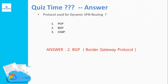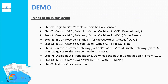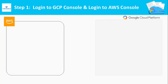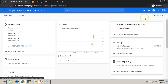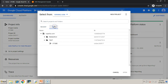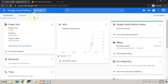Let's proceed to the demo. We have around nine steps for this demo. Step one: login to the GCP console and the AWS console. To save time, I have already logged into both the GCP console and the AWS Management Console. Just cross-check that you are logged into the correct project.